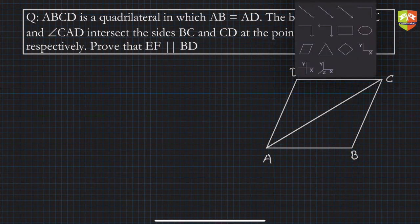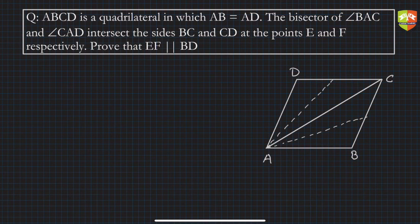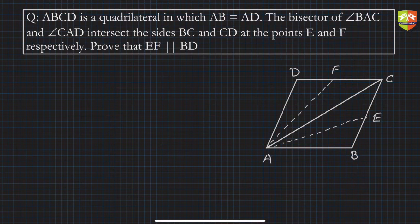We draw the bisector of angle BAC and similarly the bisector of angle CAD. The bisector of angle BAC meets BC at point E, and the bisector of angle CAD meets CD at point F.